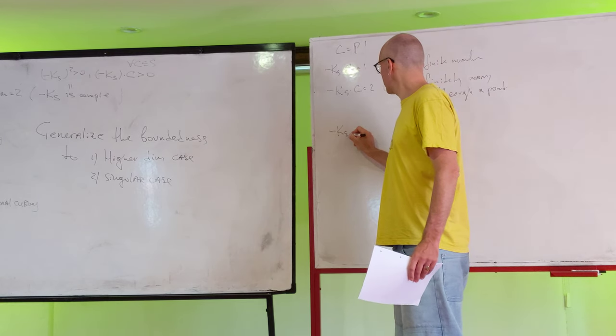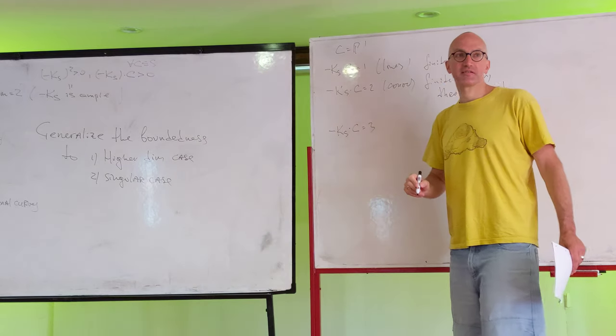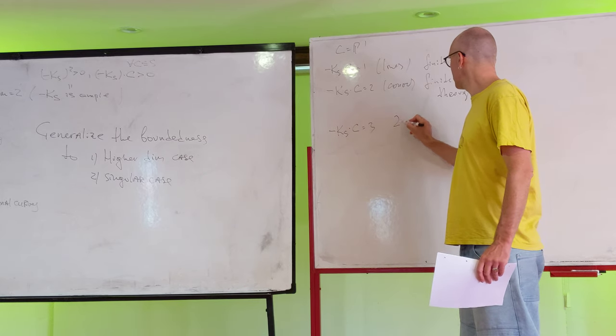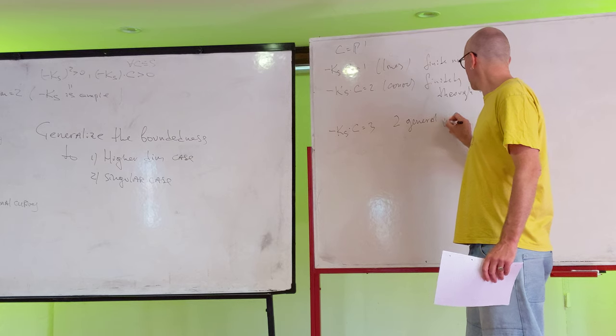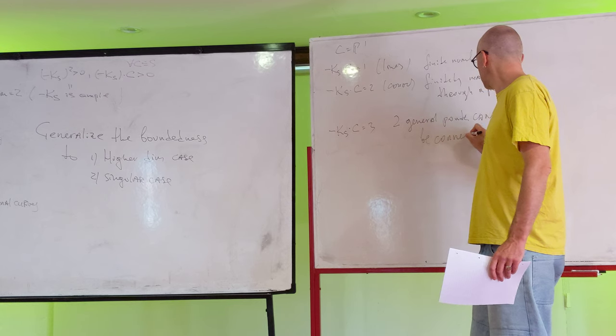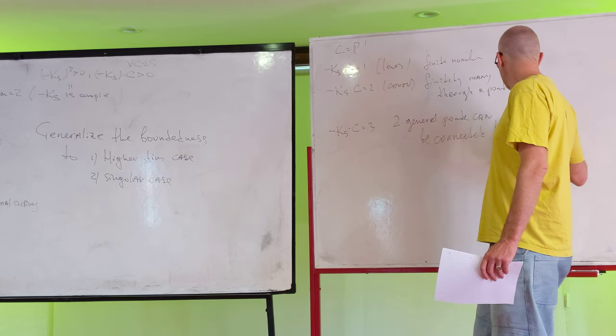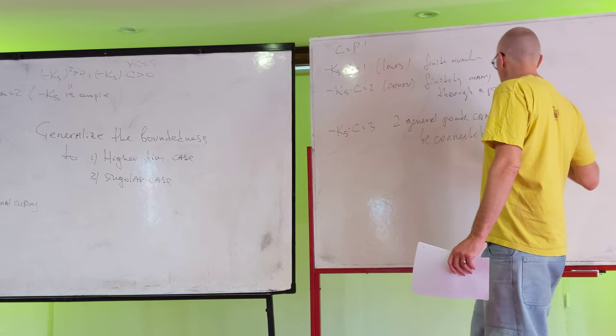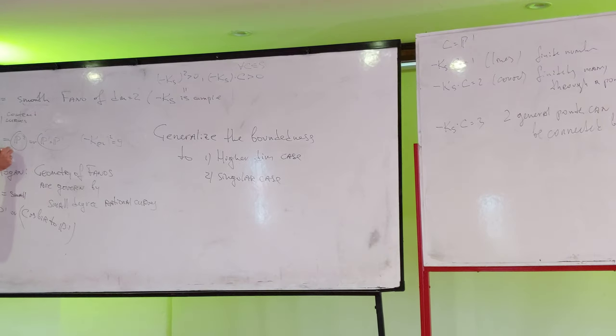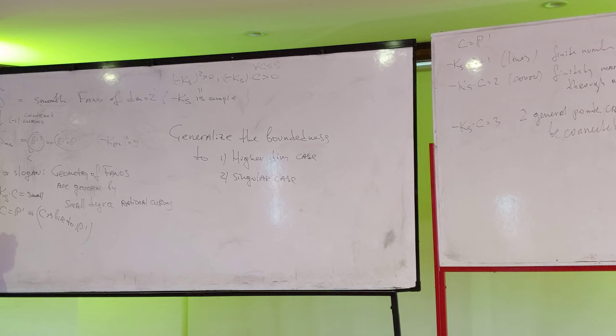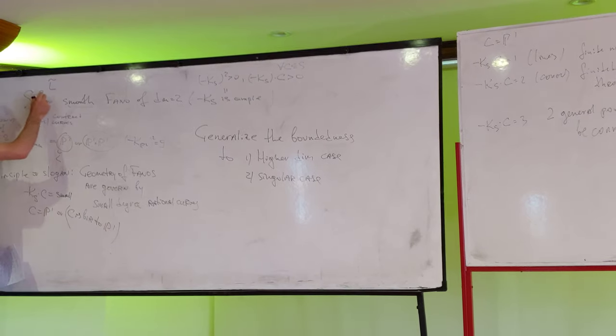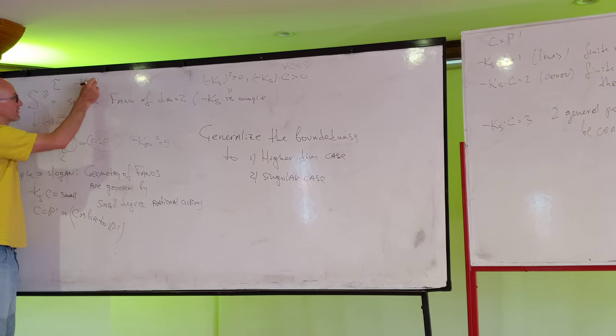And the next case, cubics. And there's a lot, so basically two general points can be connected by this curve. Two general points can be connected by such curve. And this curve, it's actually the same here. We consider this P2 case. We take a line in P2. And then you take this general line here. And you take its transformer here.